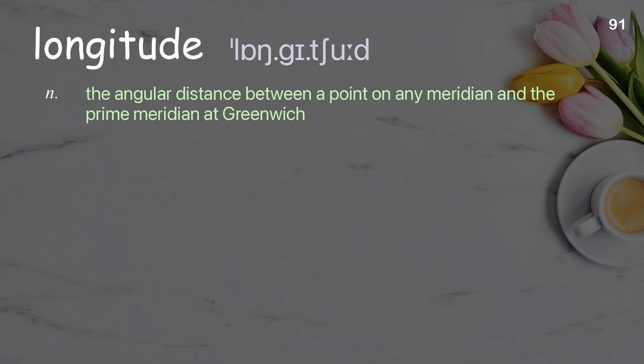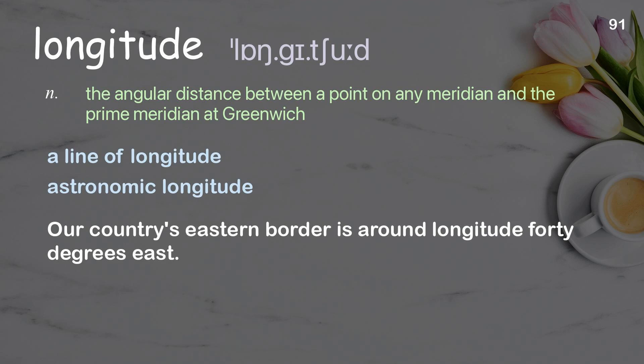Longitude: The angular distance between a point on any meridian and the prime meridian at Greenwich. Examples: a line of longitude, astronomic longitude. Our country's eastern border is around longitude 40 degrees east.